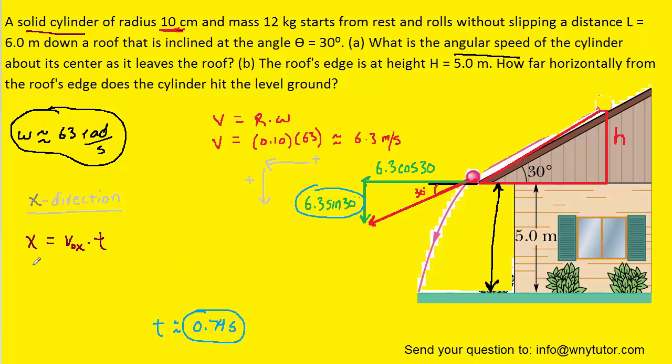And we now simply have to plug in to this equation the initial velocity in the x direction, which, recall, was the 6.3 cos 30, and then the time that we just calculated. And when we crunch that down, we get approximately 4 meters for the displacement in the x direction. And that would, indeed, be how far horizontally from the roof's edge the cylinder hits the level ground.